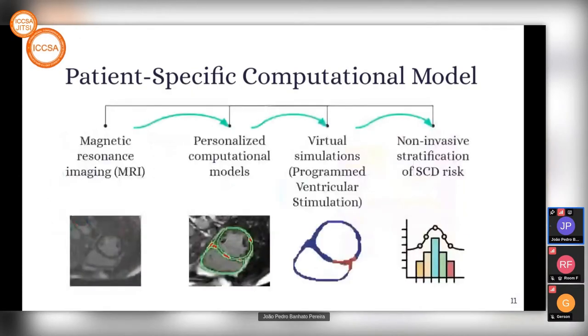We have the magnetic resonance imaging of the patient, the MRI data, to evaluate the patient's arrhythmia risk. Then we create personalized computational models on these MRI data, in which we can do virtual simulations of programmed ventricular stimulation. By the end, we get a non-invasive stratification of sudden cardiac death risk.